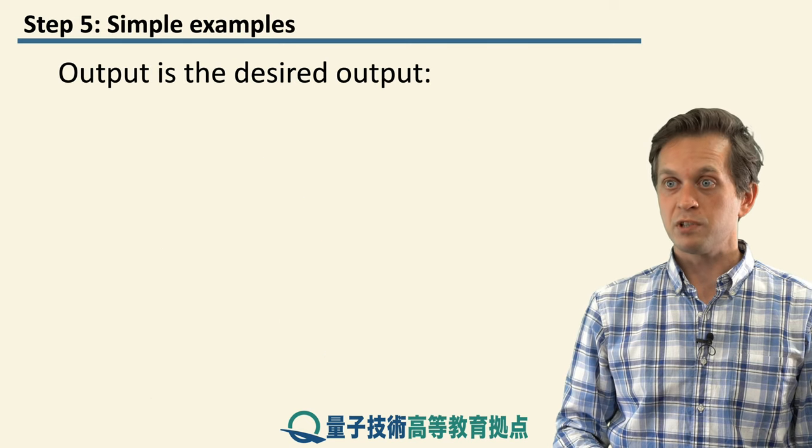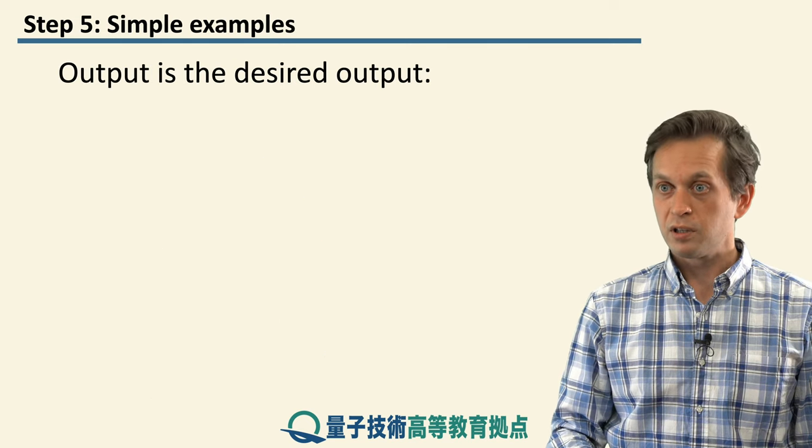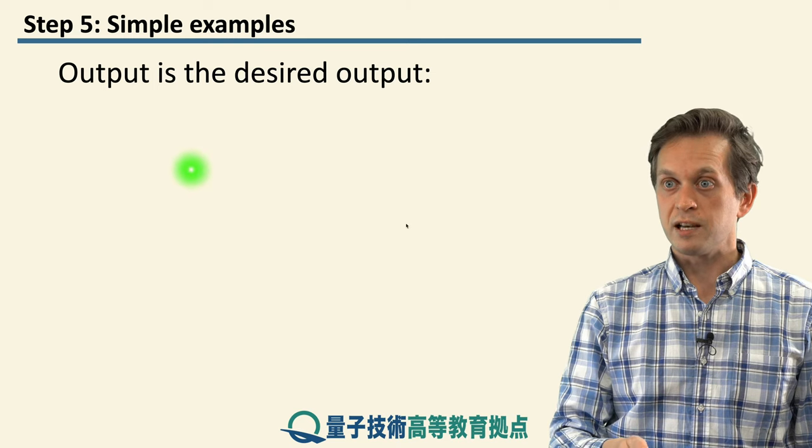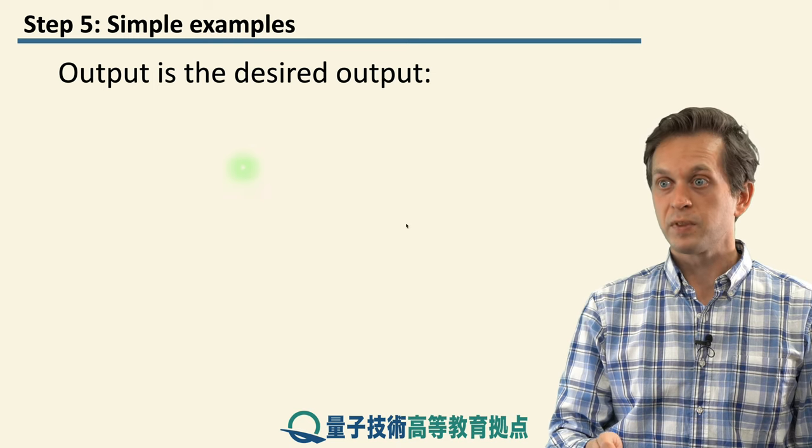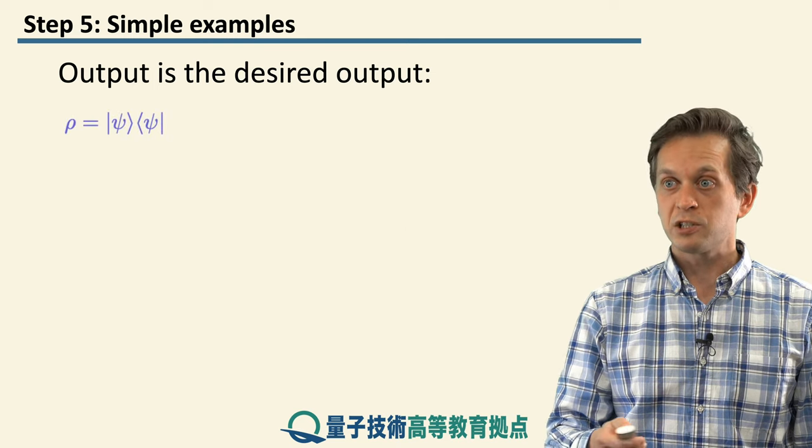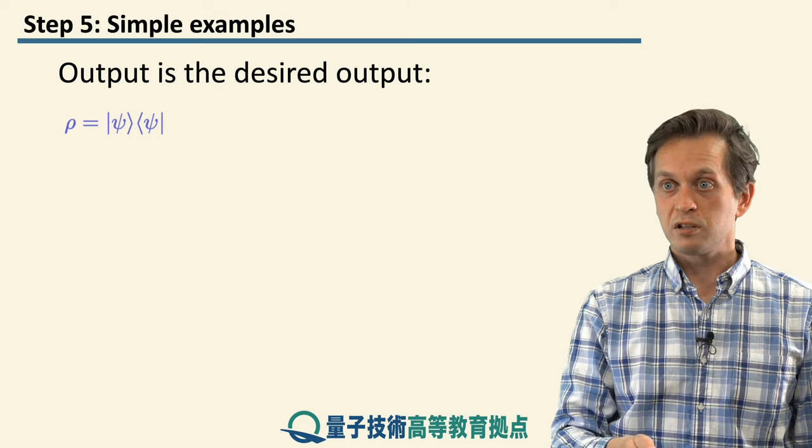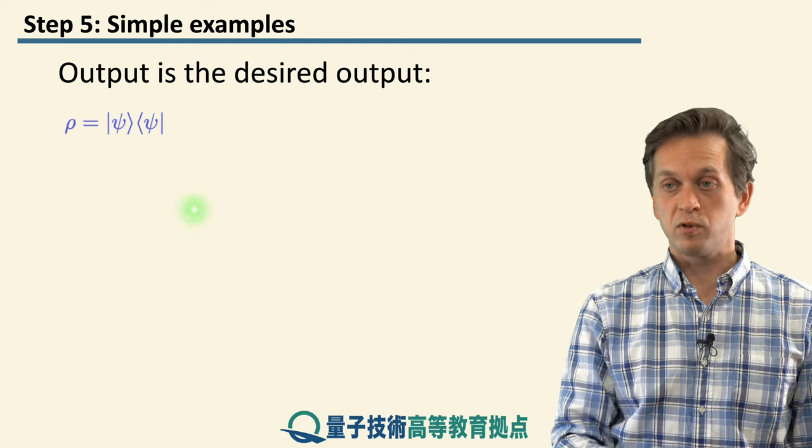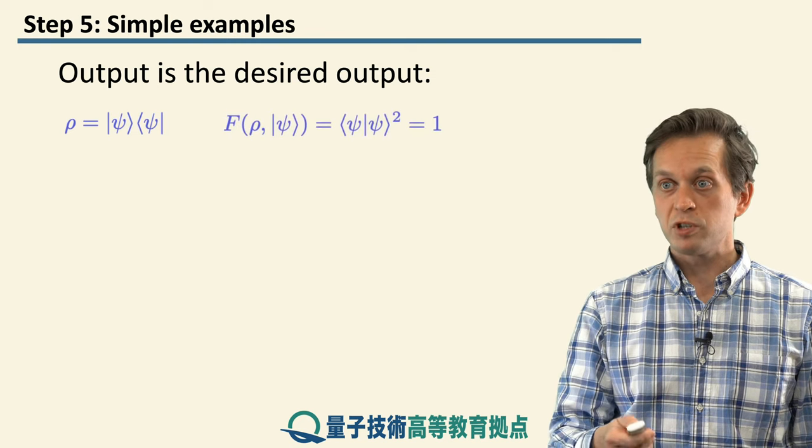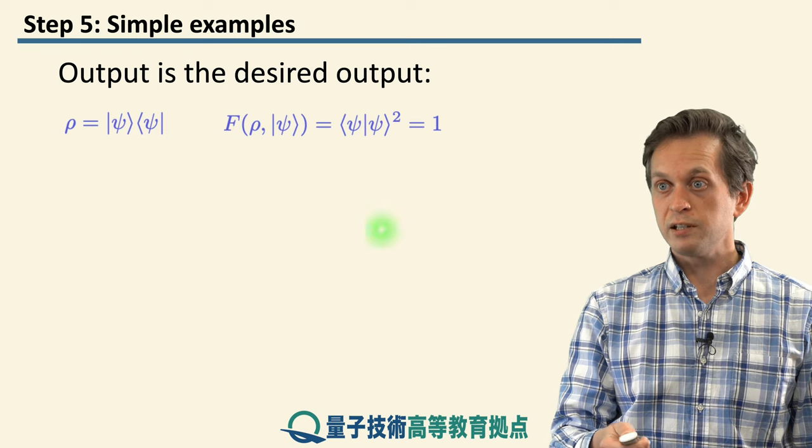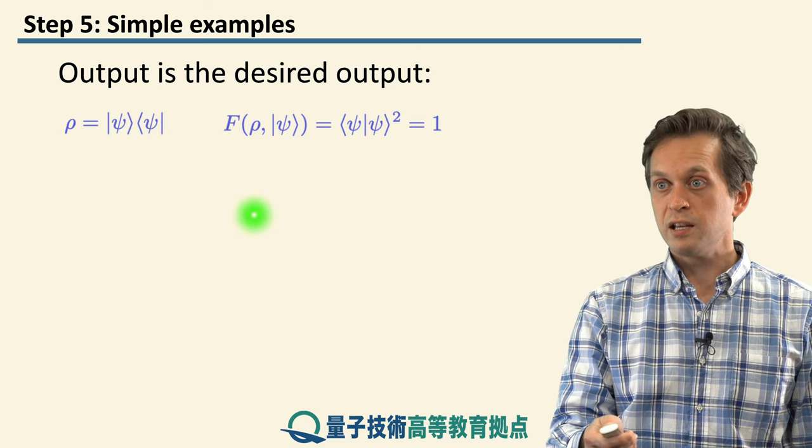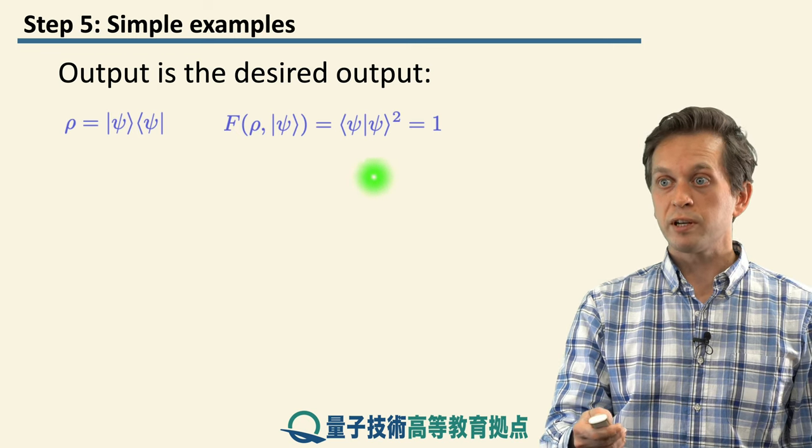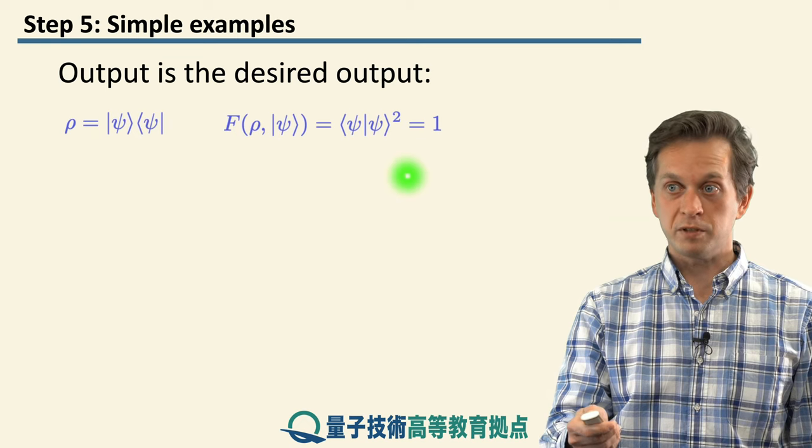So let's have a look at some examples just to give you a little bit of exercise with how fidelities are computed. So let's say that the output is actually the desired output. So we have rho is this pure state written in density matrix formalism. Then we just substitute it into our formula for fidelity, and we get that fidelity is equal to the inner product between psi and psi squared.